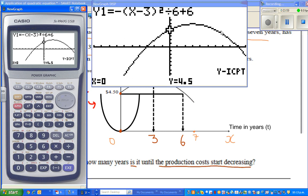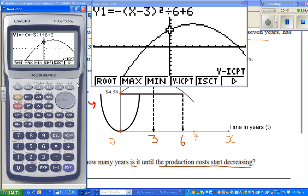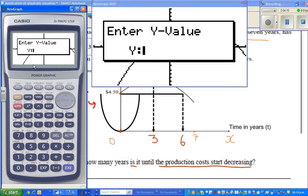So after 6 years, again, you will reach $4.50. So how can you check that? G-solve. And I want to calculate the x value. That is the t. So they're asking me, what's the y-value? That's the cost. So I'm telling them my cost is $4.50.